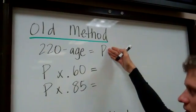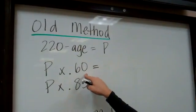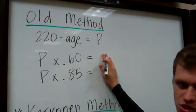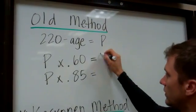You take that number, we'll call it P, and you times it by .60 and that will give you the bottom part of your range. In the case of a 50 year old person, this would be 102.